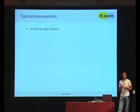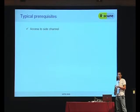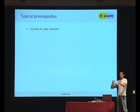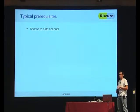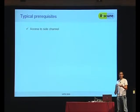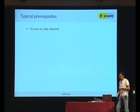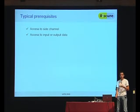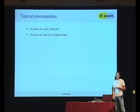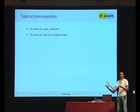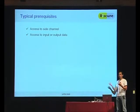What are the prerequisites? First of all, you need access to the side channel. Electromagnetic, for instance, is a bit easier because it's a field around a device. But power may require quite some work, especially for an embedded device. A smart card is pretty simple because it has defined contacts. But for an embedded device it may be a different case. You also need access to data that's related to the operation, which may not be trivial. If it's a closed device with a closed protocol, it might be quite tricky to get to that data.